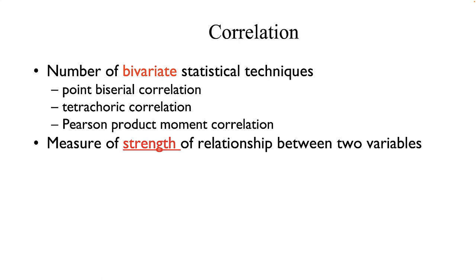More specifically, a correlation measures the strength of the relationship between two variables. We can use either of two types of analysis: correlational analysis and bivariate regression analysis. We'll see this overview of correlation in this lecture, and cover bivariate regression and its extension — multiple regression — in the video lecture on making decisions in selection testing.